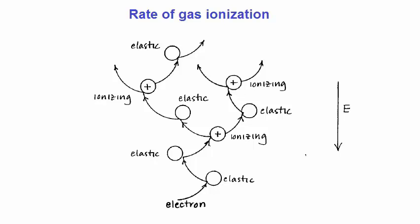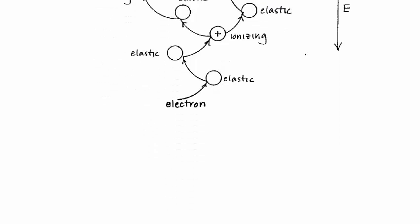And the subsequent electrons produced from that ionization can go on to be accelerated, and either undergo elastic collisions or ionization collisions. Because this is a stochastic process, we can come up with a rate equation. That is, the rate at which certain reactions are expected to occur.